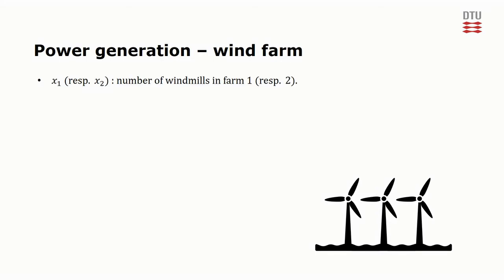Integer variable x1 respectively x2 determines the number of windmills in wind farm 1 respectively 2. It is required that the windmills satisfy the power demand of the city, given by d. The amount of power delivered by each windmill is stochastic. It depends on the direction and strength of the wind and is assumed to follow a normal distribution. It might not be the same for windmills in each of the two parks.